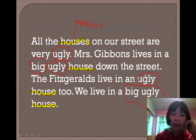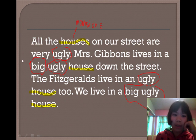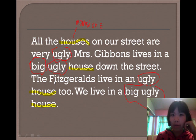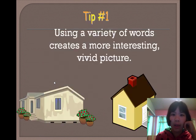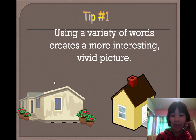Ugly — what's a synonym for ugly? Hideous is a great one. Big — what's another word for big? Ginormous — that's one I get a lot from students. So you can really change up a lot of things here. Using a variety of words creates a more interesting, vivid picture.